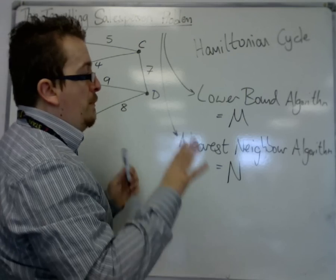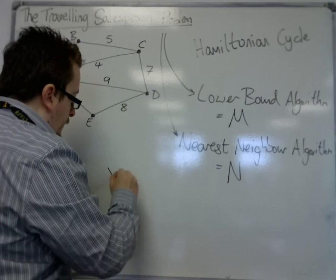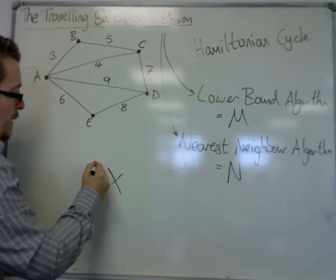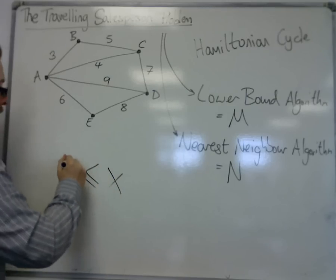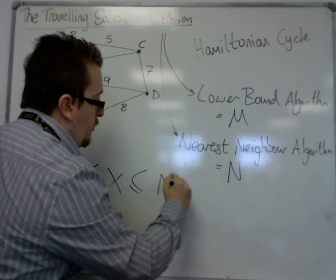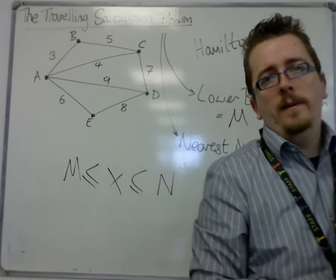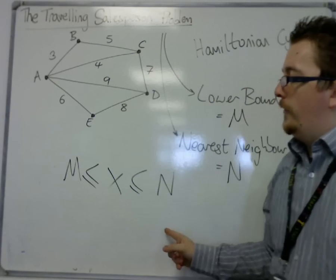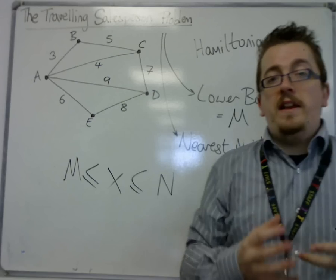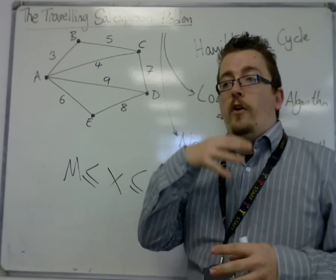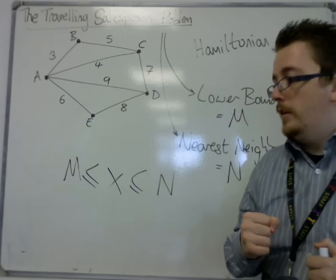So that the optimum solution X will be somewhere between these two values. Now, if these two values are the same, the M and N are the same, then yes, we have a tour that is of minimum value.